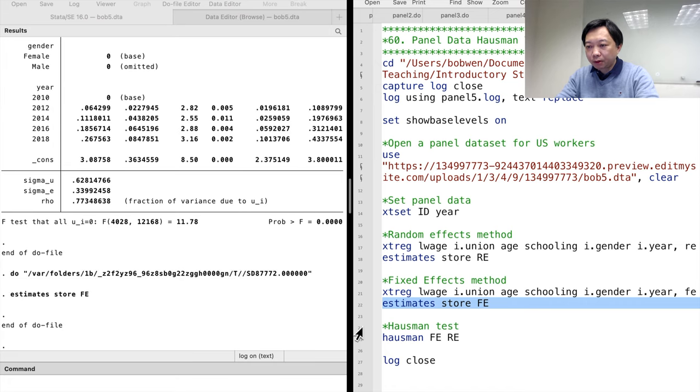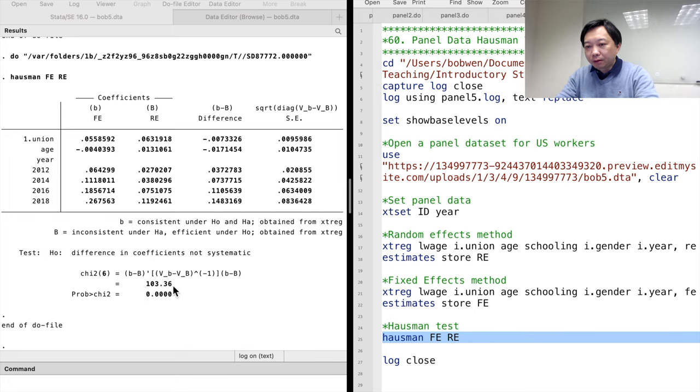After that, we can perform the Hausman test to compare the estimates. We type Hausman followed by the model's names. We see that the statistic is high and the p-value is extremely low. We reject the null hypothesis of no difference in the results. In other words, the fixed effects estimates are significantly different from the random effects estimates. The fixed effects estimates are preferred because they are consistent.